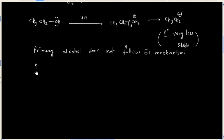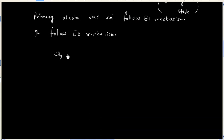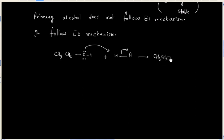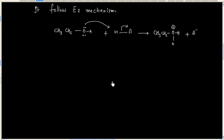Basically, primary alcohol follows the E2 mechanism. The first step is the same — protonation of the alcohol. But in the next step, loss of H⁺ and loss of the leaving group both happen together in a concerted fashion.